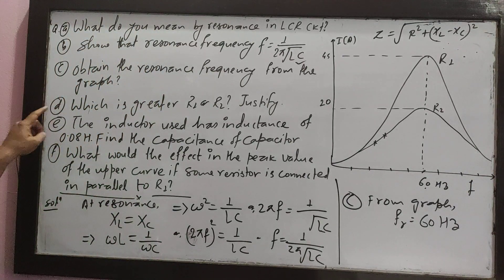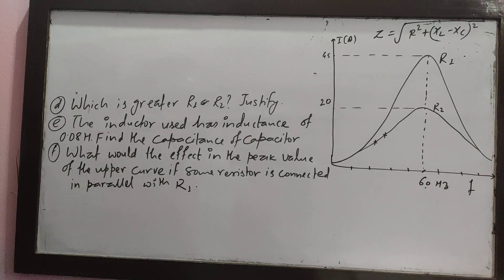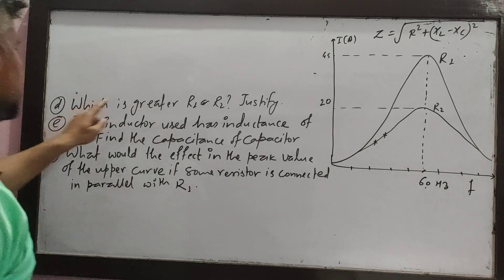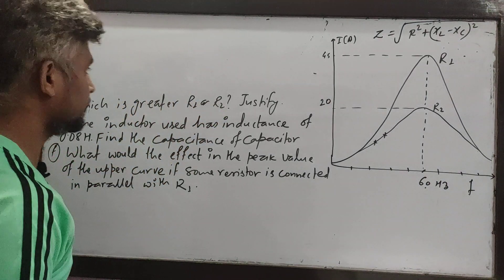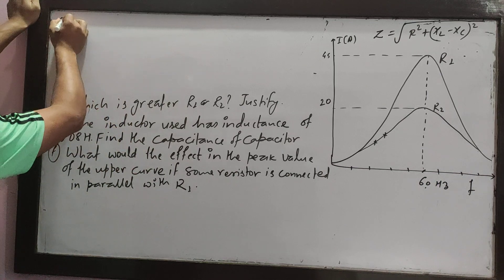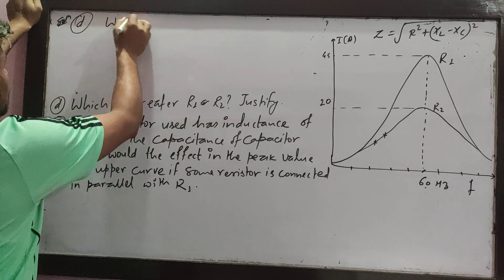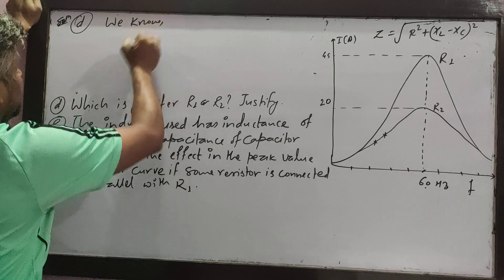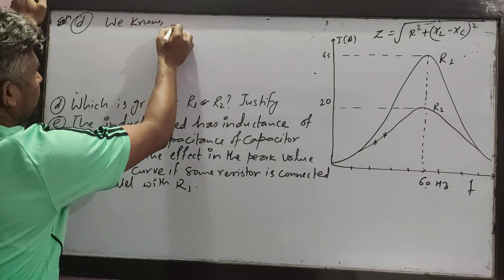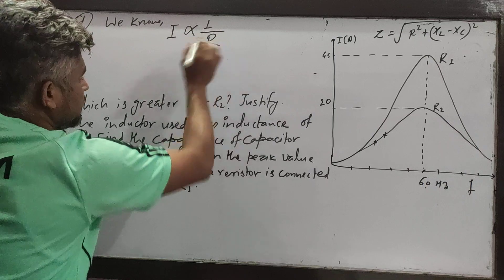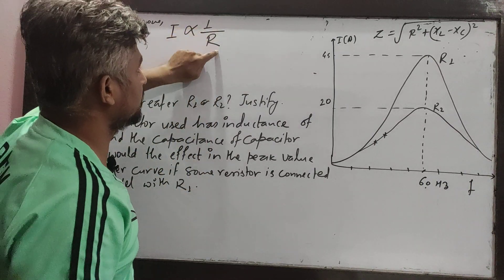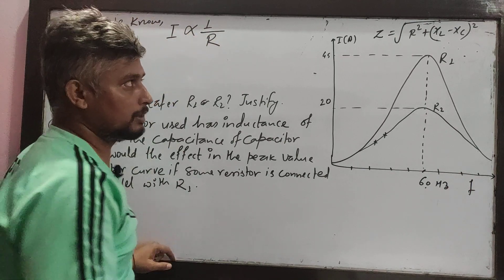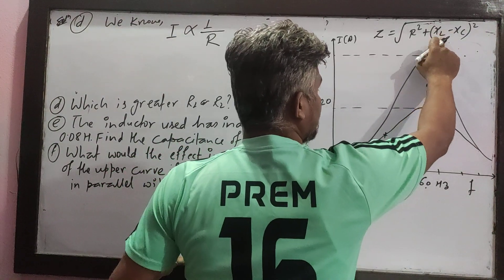Now we have to determine which is greater, R1 or R2. We know that current is inversely proportional to resistance. At resonance, XL equals XC, so Z equals R.